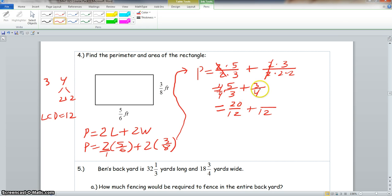4 times 5 is 20, and 4 times 3 is 12. Next, 12 divided by 4 is 3, so we multiply our numerator and denominator by 3, and that will give us 9 twelfths. 20 over 12 plus 9 over 12 is 29 over 12.